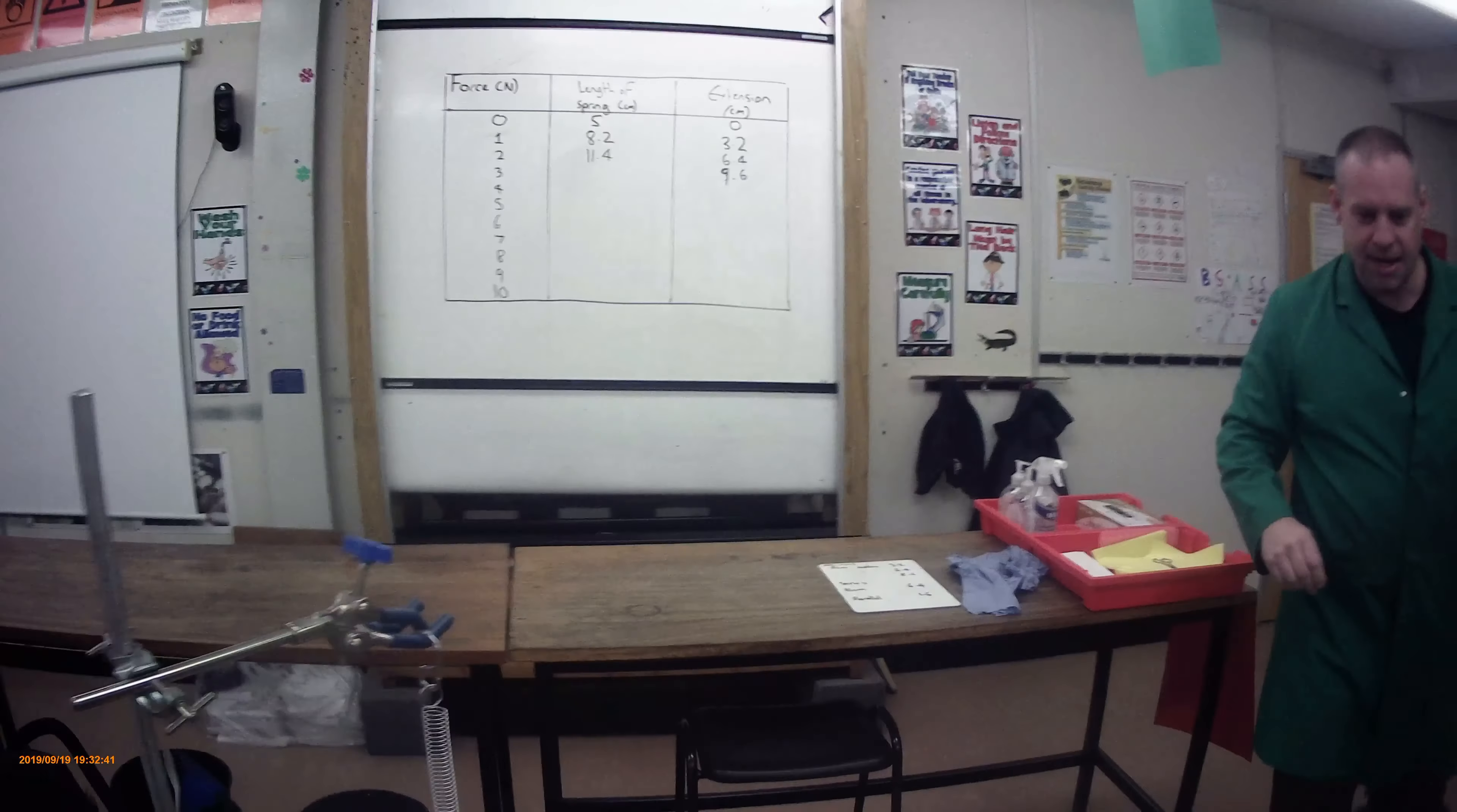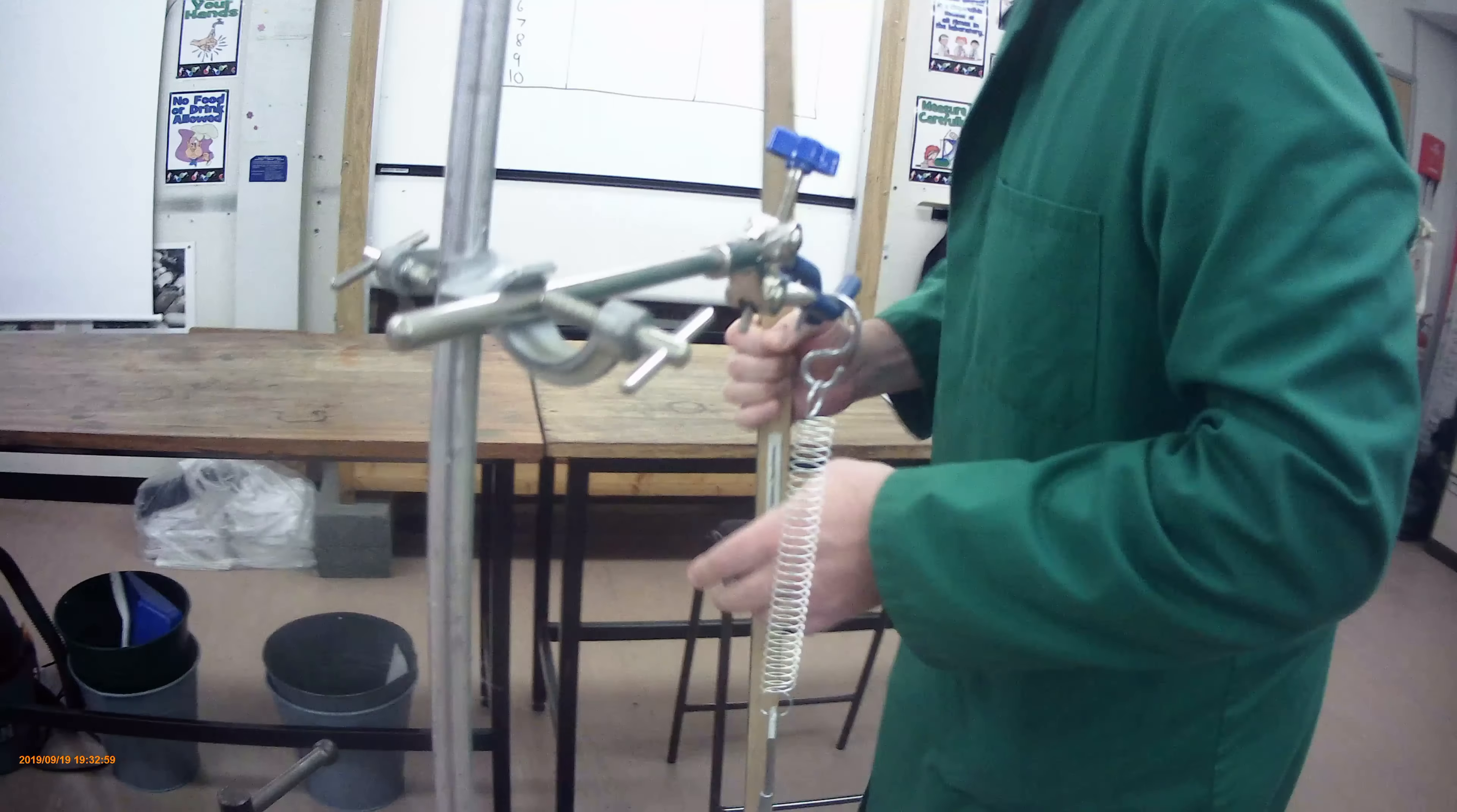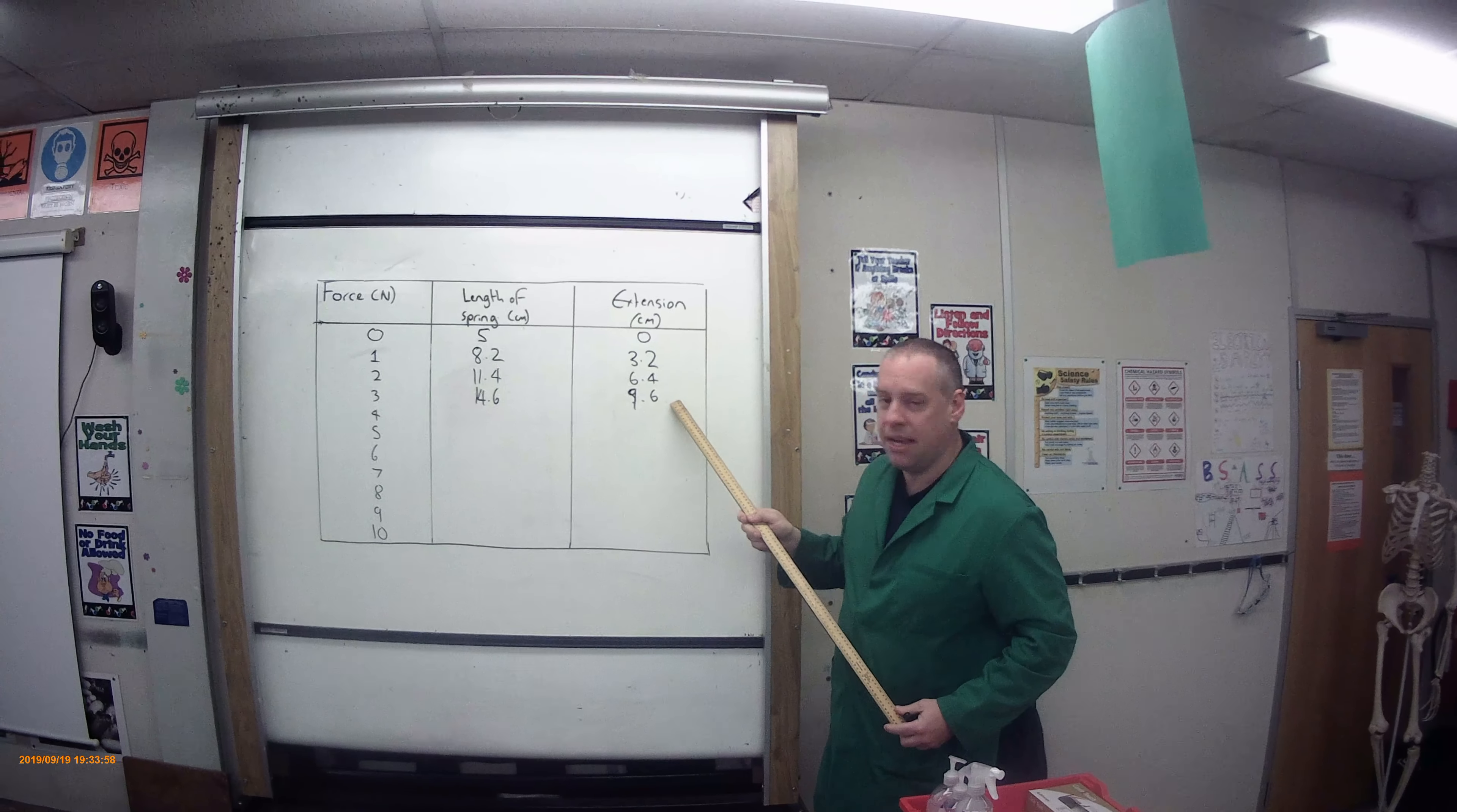Let's put on a mass here. Put my ruler on here. Measure from there to there. Okay, look at that, 14.6. Perfect, 14.6. So we can say the relationship here is a linear relationship. It goes up equally each time.